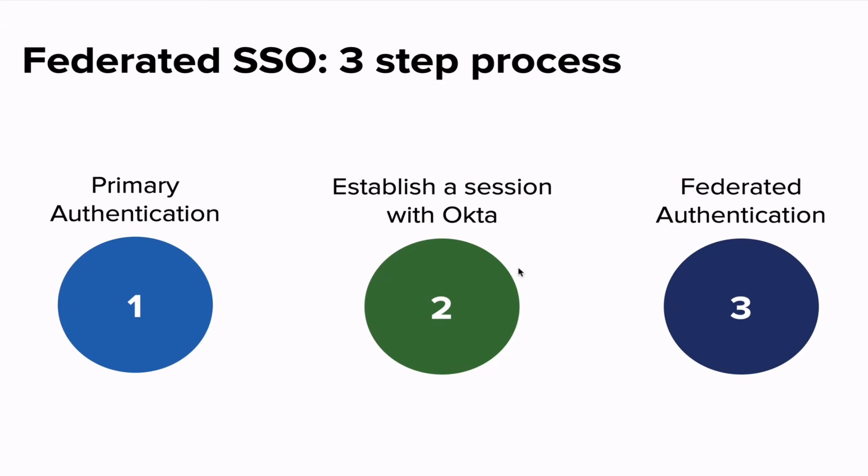I'd like to take a brief moment to show you what we cover in the Single Sign-On Your Apps and Sites with OpenID Connect course. We split up the process of doing federated single sign-on into the following steps: first, you do primary authentication — logging in with a username and password. After that, you establish a session with Okta, and Okta creates a cookie associated with your unique Okta domain. Then you perform federated authentication, requesting the identity information for the current user, and Okta sends that back as an ID token. In this one-day class, we focus on that federated authentication step.